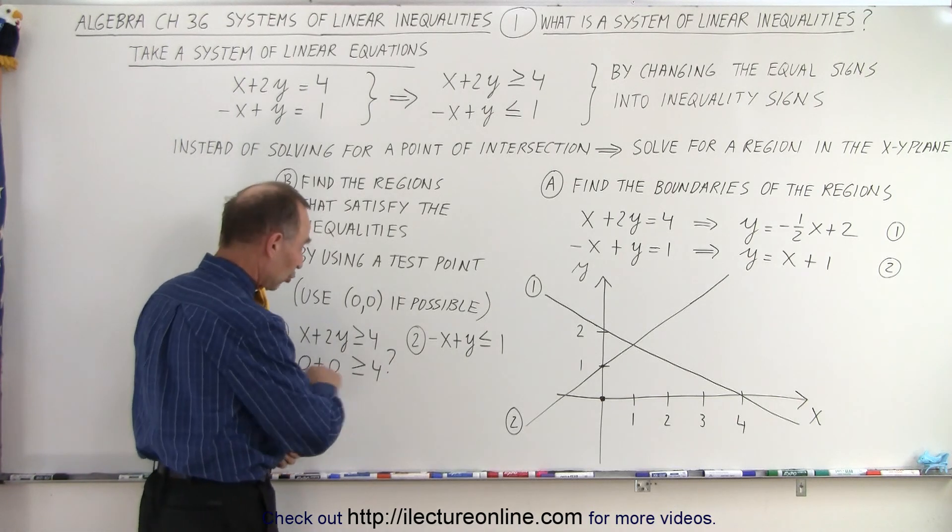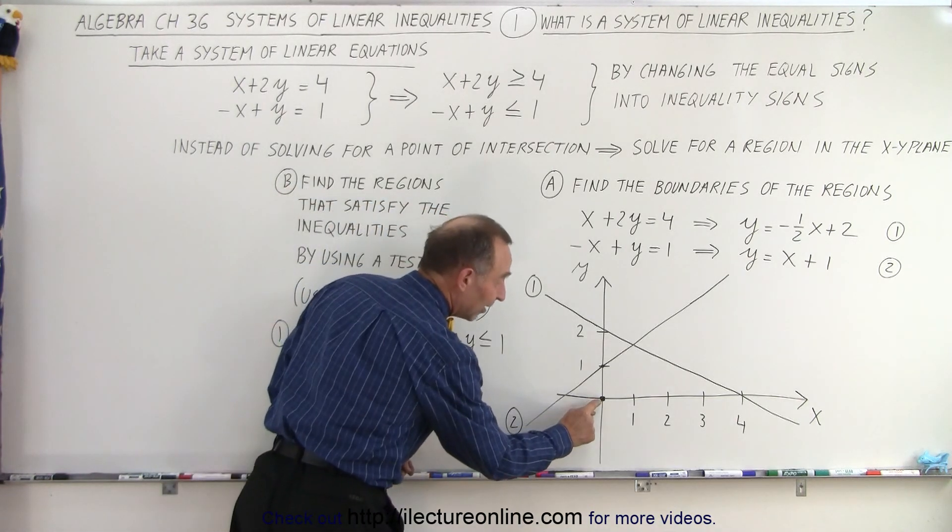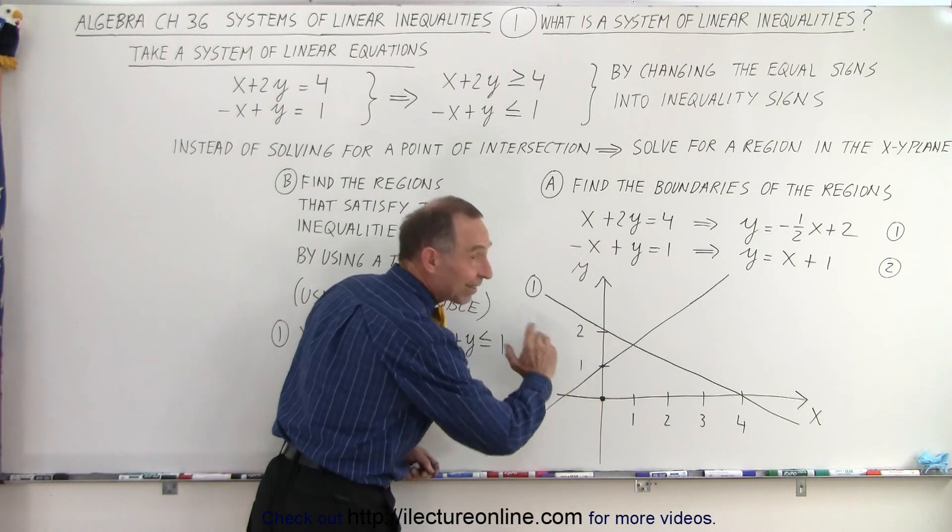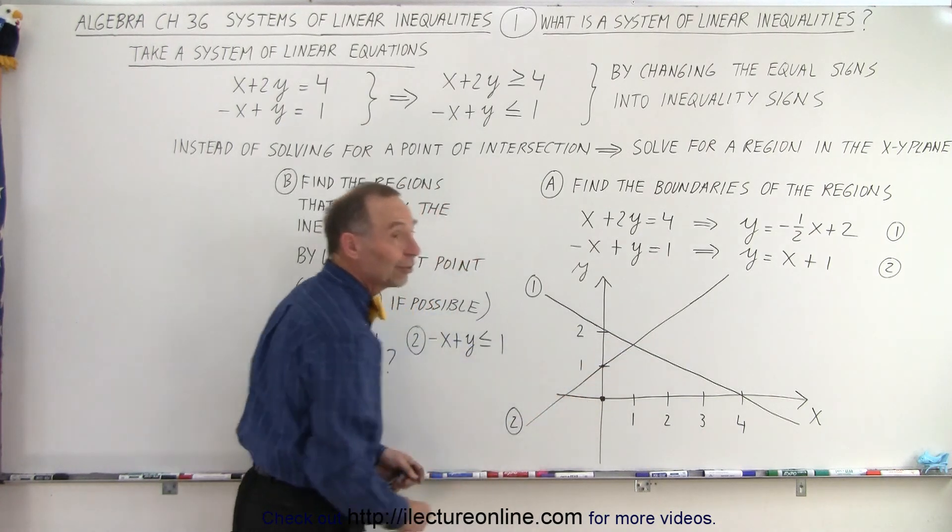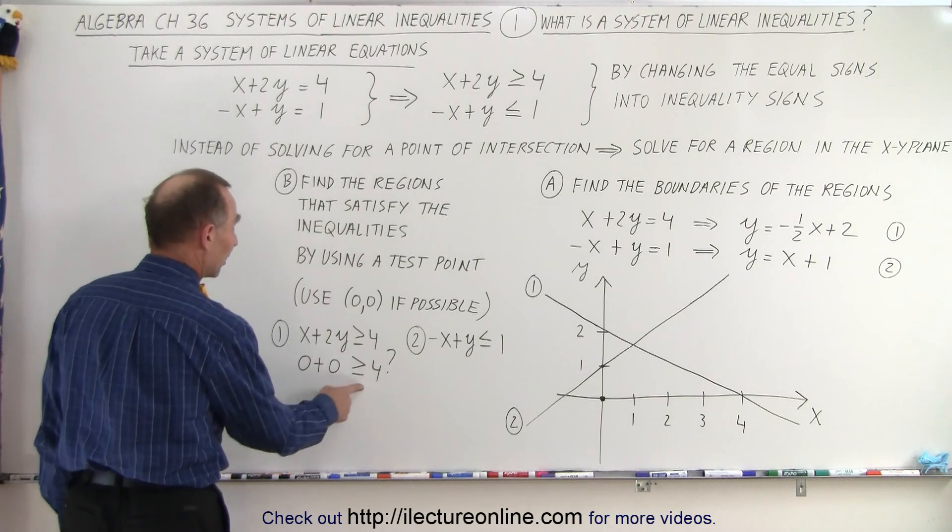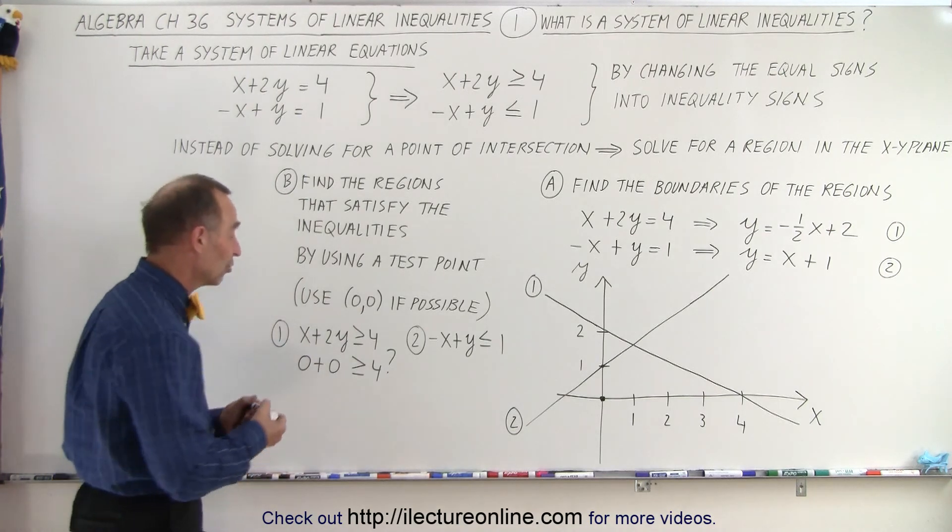In other words, is this a true statement? If it is, then this point lies on the correct side of the line. If it's not, it lies on the incorrect side of the line. So let's try it. Is 0 greater than 4? Of course, it's not. The answer is no.